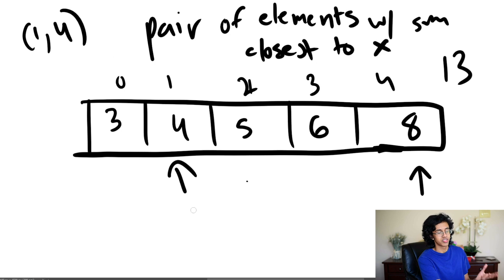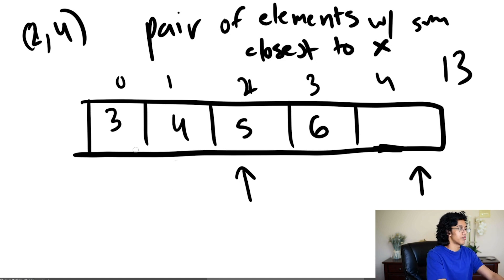So, now, it's still smaller than 13, so we once again have to bring this guy up. And, now, we're exactly at 13. So, now, we know that 2, 4 is our answer. So, that was not a great example, because we only had to move one of the pointers. But, what happened? It was more complicated.